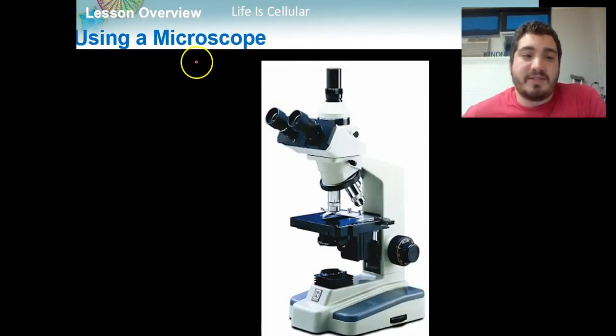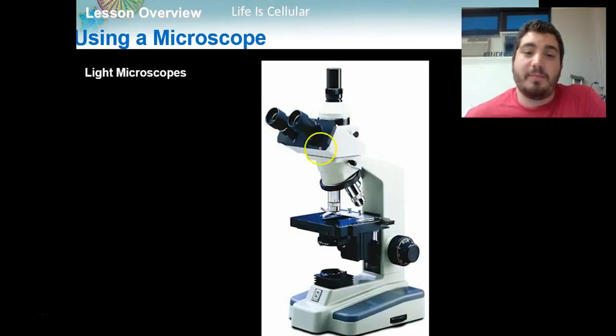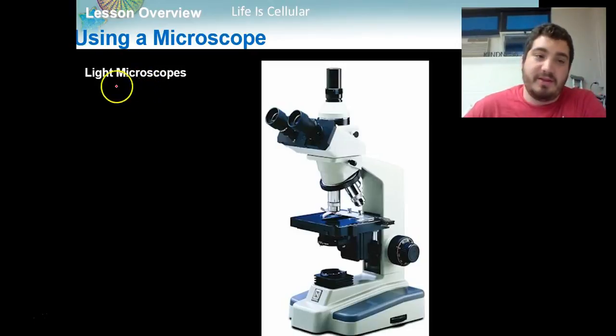And in order to talk about the cell theory, we need to learn how to use a microscope. Now, hopefully we've all seen a microscope before. Maybe we've never played with one. But this is what's called a light compound microscope. This is the microscope that you'll usually see in a lab and we'll get to use. And in order to look at things, it uses light.